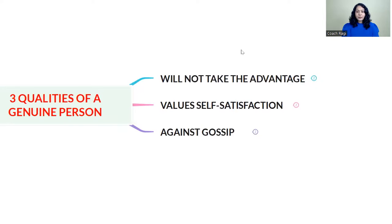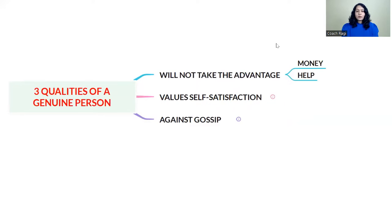A genuine person around us will not take advantage from us. If a person is taking advantage — like money or health — then that person is not genuine. Keep away from that person; it is very good for your life. A genuine person will not take advantage of your money or health.